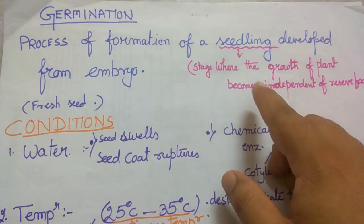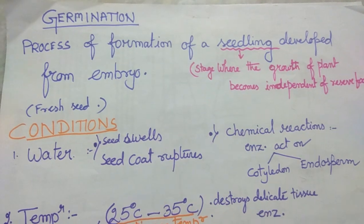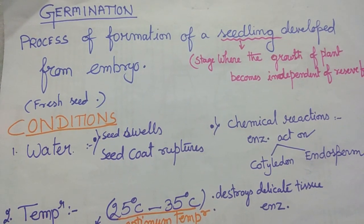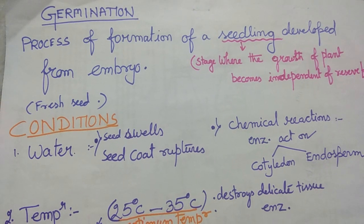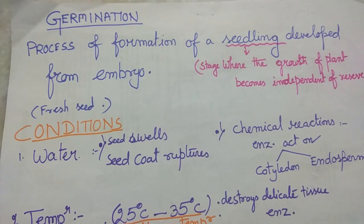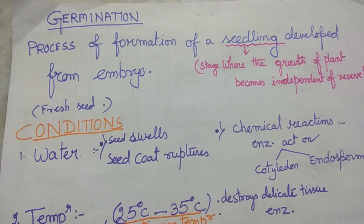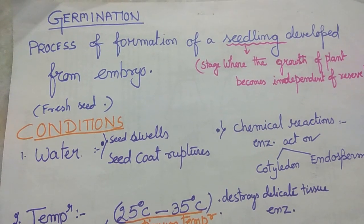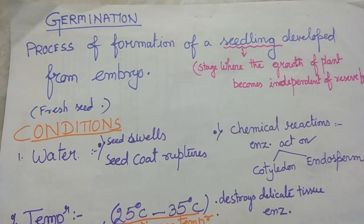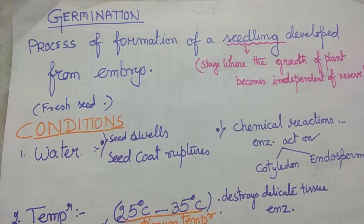A seedling is the stage where the growth of the plant becomes independent of reserved food material. During germination, the cotyledon is still intact and the plant takes nutrition from it. But when the plant is no longer dependent on the reserved food material from the seed, it is called a seedling. So the phase between the seed and the seedling is called germination.